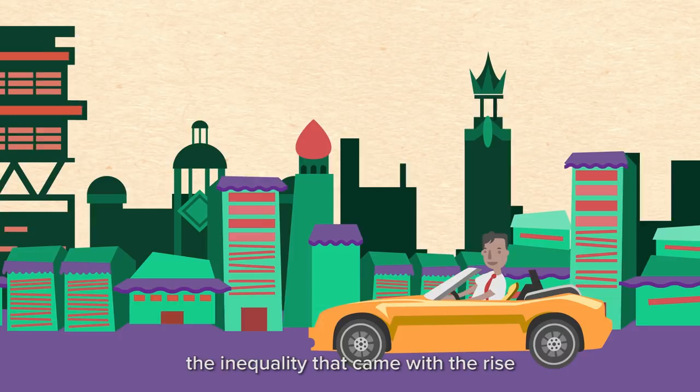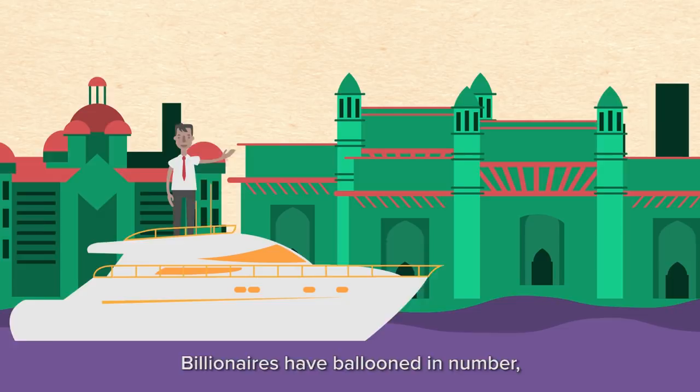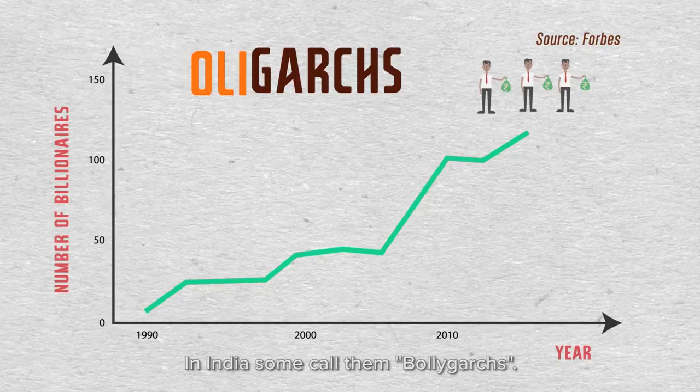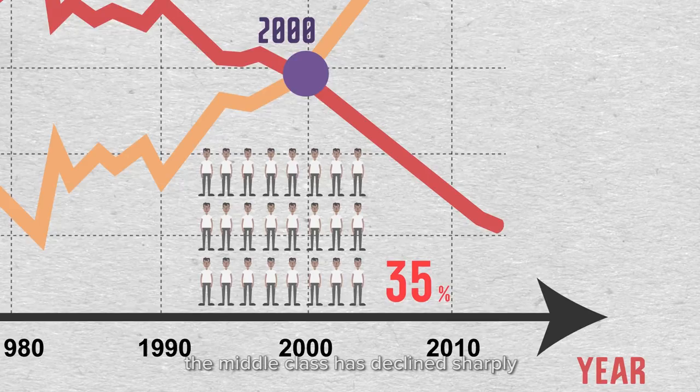India's hyper wealthy grew more quickly than in almost any country in history. Billionaires have ballooned in number from just a small handful in the late 1990s to around 120 today. In Russia they were known as oligarchs; in India some call them boligarchs. Over the same period, India's top 10 percent of income owners thrived, while the share of the middle 40 percent — the middle class — declined sharply.